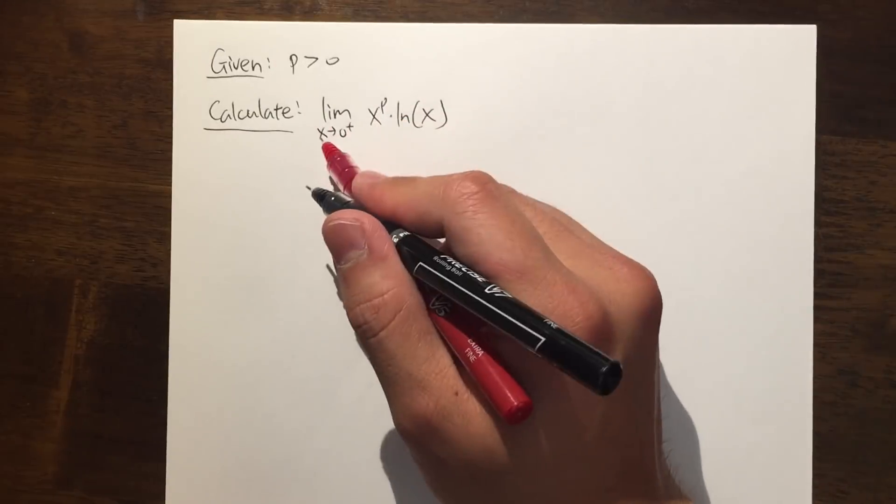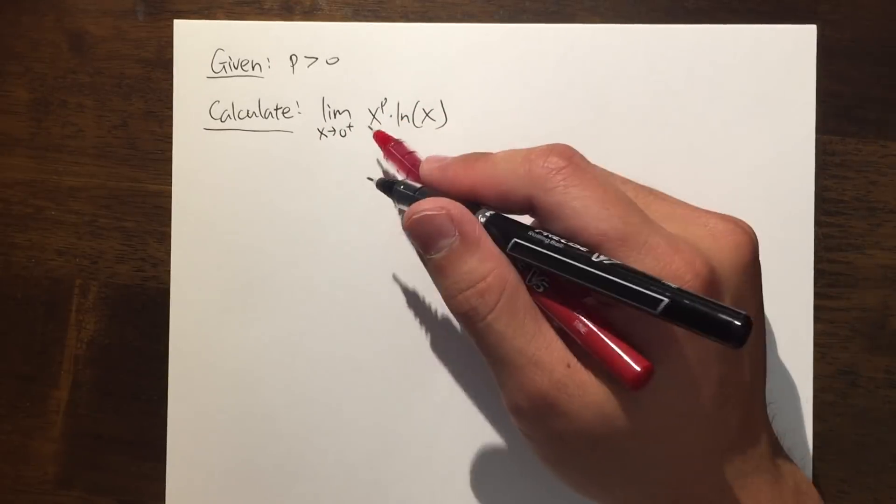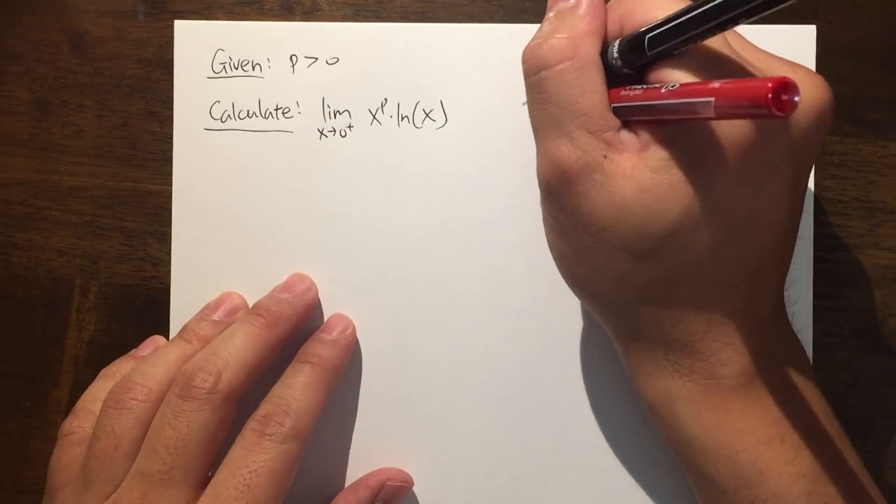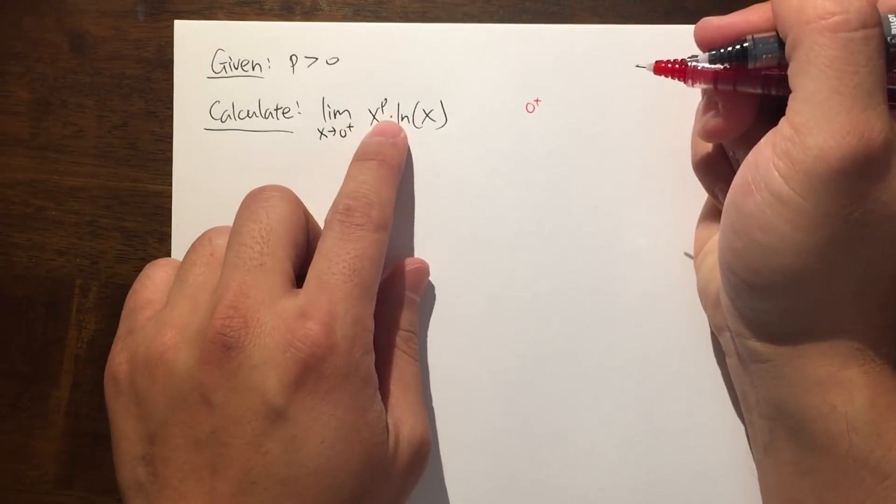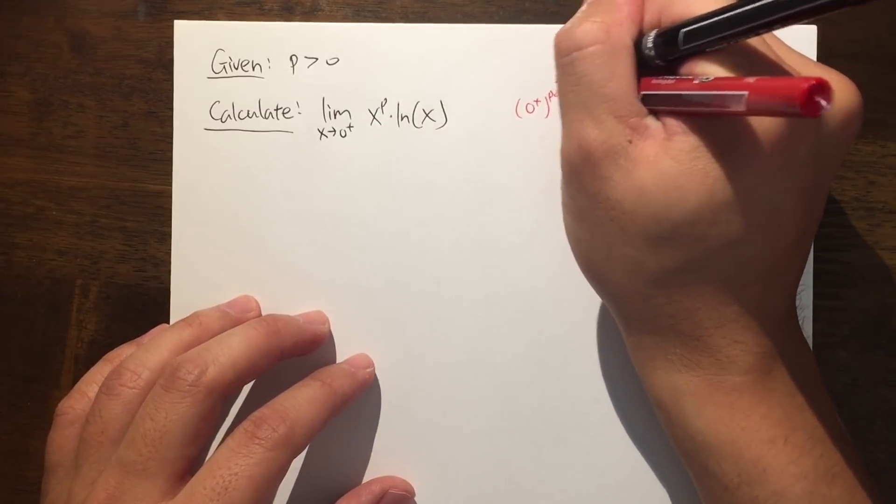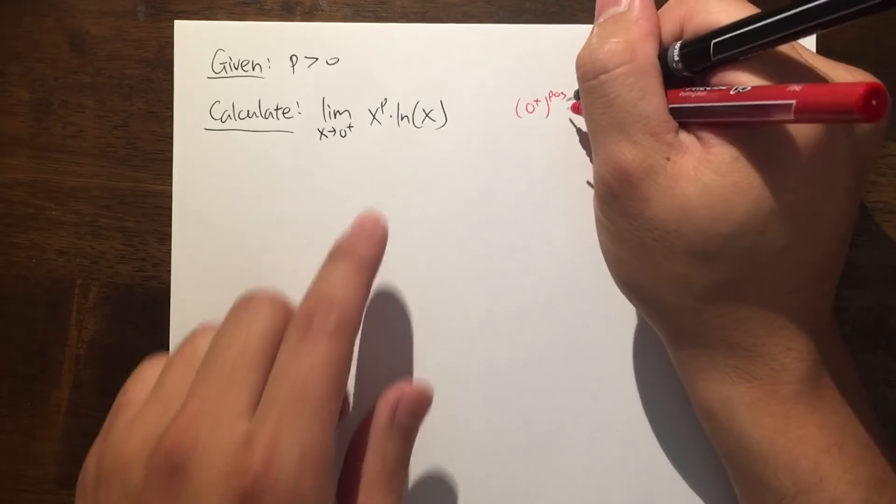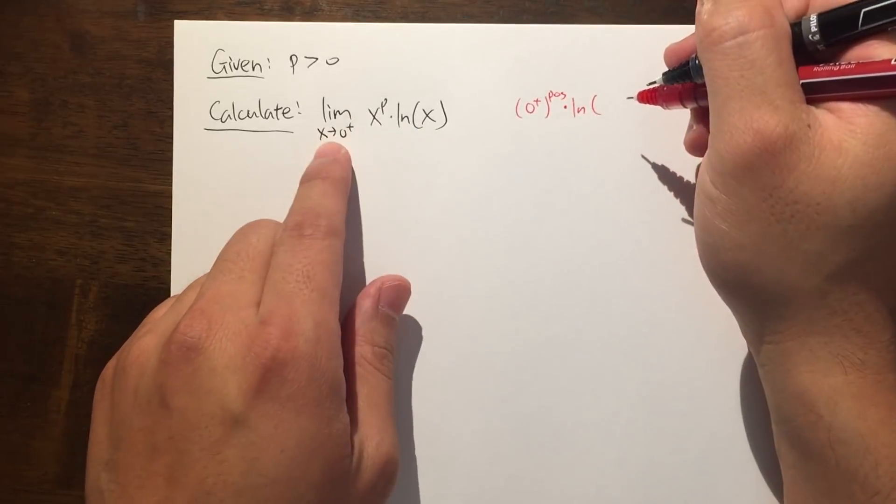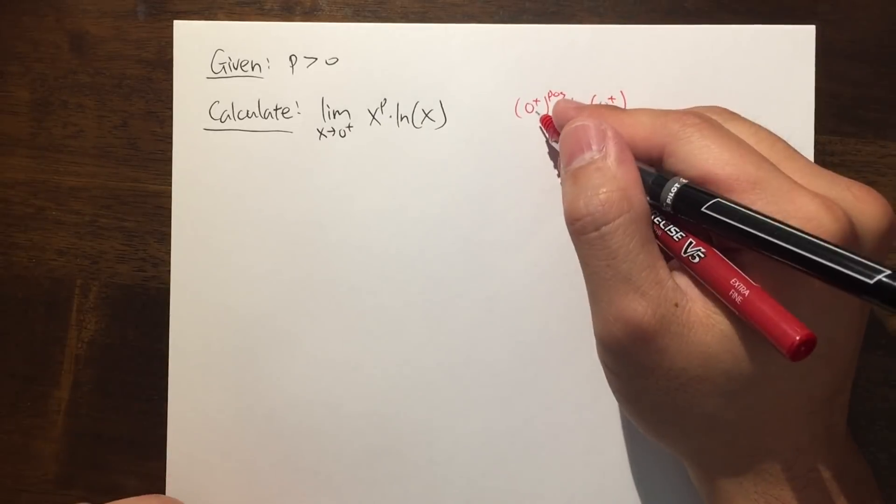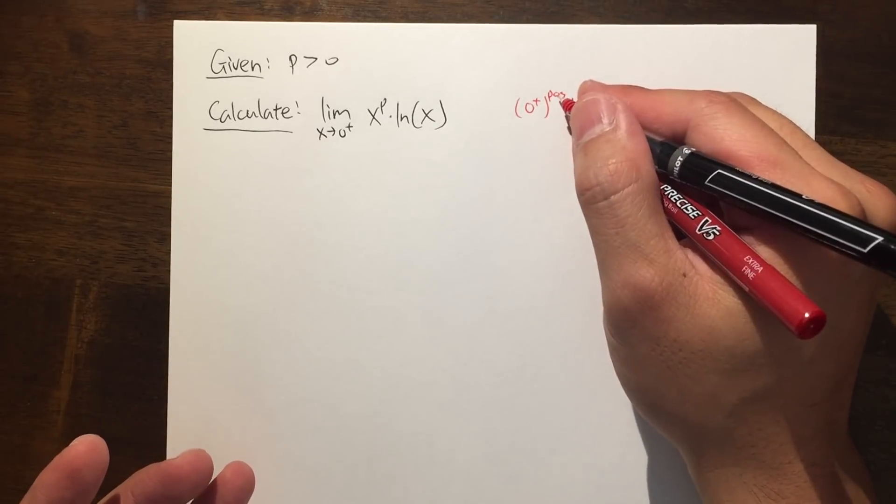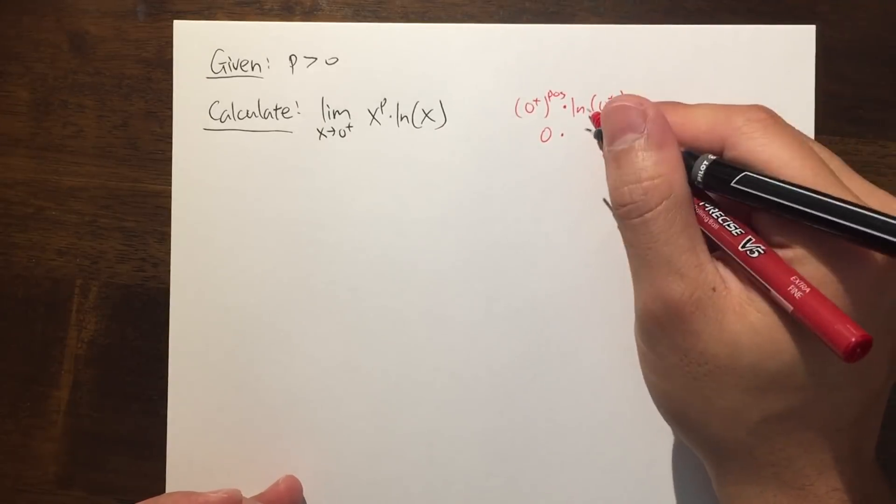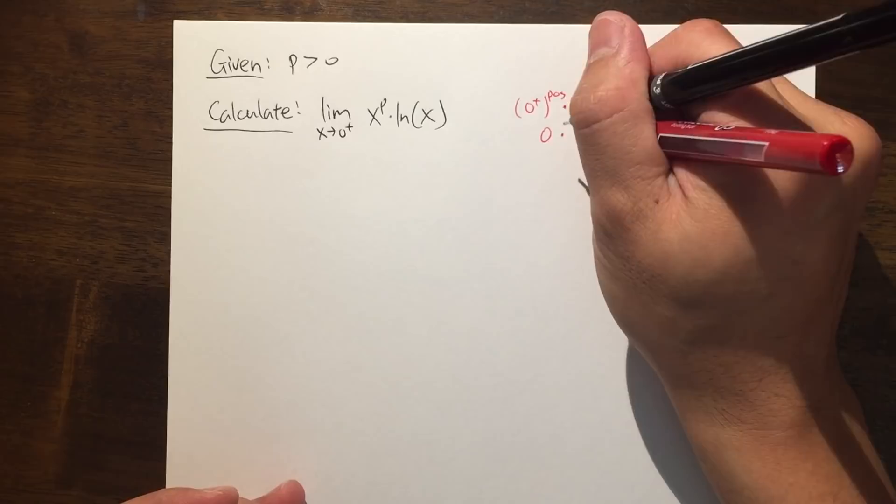Of course, we should just first plug in x is equal to 0 plus into this x and x to see what happens. And when we do that, we see that we will have 0 plus raised to a positive number for the power, and then we multiply by ln of 0 plus. And because x is going to 0 plus and this is positive exponent, so this right here is still 0 times ln of 0 plus, which is negative infinity.